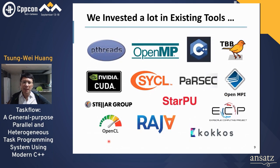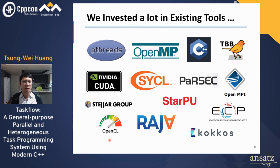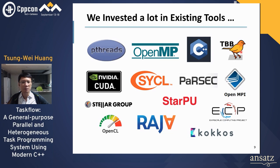Because building a parallel CAD tool is very complex, we want to find a programming system that can assist with the implementation and deployment of parallel CAD algorithms. We invested heavily in existing parallel computing systems, including Pthreads, OpenMP, C++ threads, Intel TBB, SYCL, StarPU, and ECP project software from the Department of Energy such as Kokkos, Raja, and Parsec. Unfortunately, we found very few of them can meet our requirements.